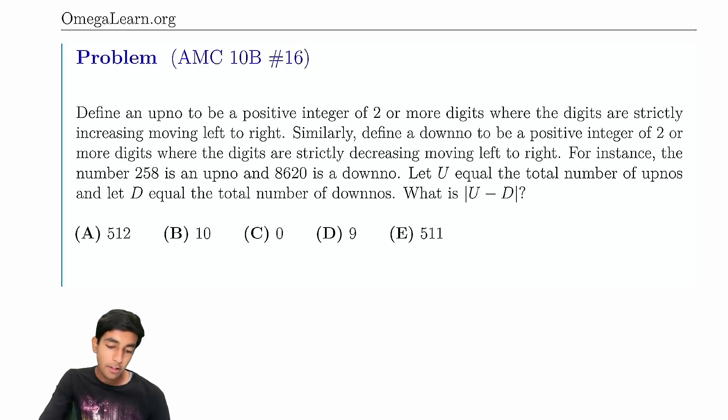Define an upno to be a positive integer of two or more digits where the digits are strictly increasing moving left to right. Similarly, define a downno to be two or more digits where the digits are strictly decreasing. For example, 258 is an upno, 8620 a downno.